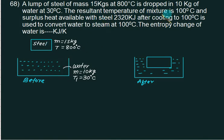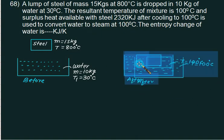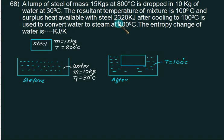But what it says? Resultant temperature of mixture is 100. He says that whatever the mixture is there, that temperature is 100. So this final temperature equals to 100. And the surplus heat available with the steel is 2320. Means after this stage also, the steel has additional heat available equal to 2320.